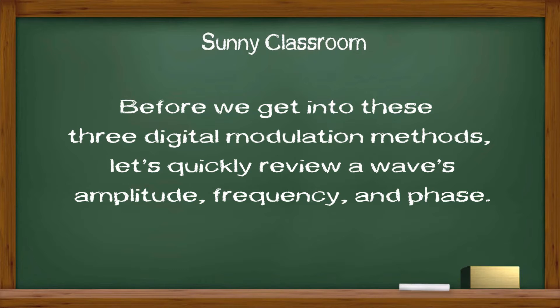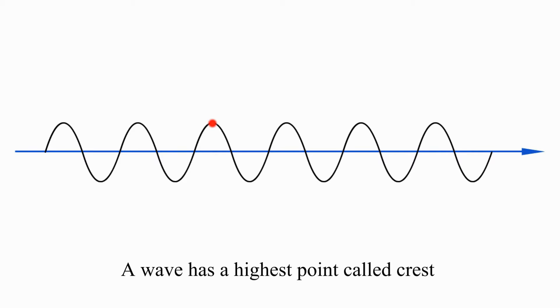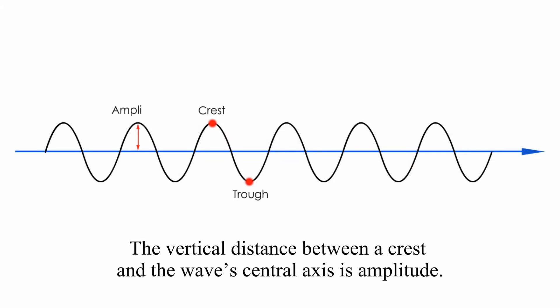Before we get into these three digital modulation methods, let's quickly review a wave's amplitude, frequency, and phase. A wave has a highest point called crest and a lowest point called trough. The vertical distance between crest and the wave's central axis is amplitude.